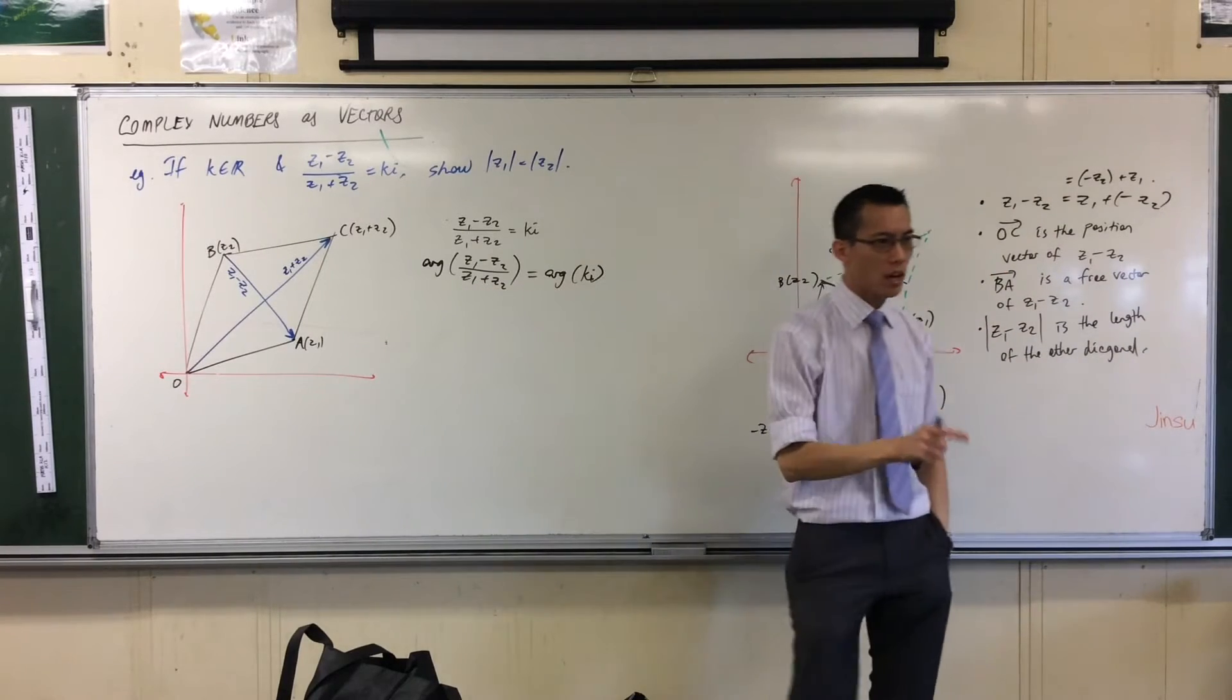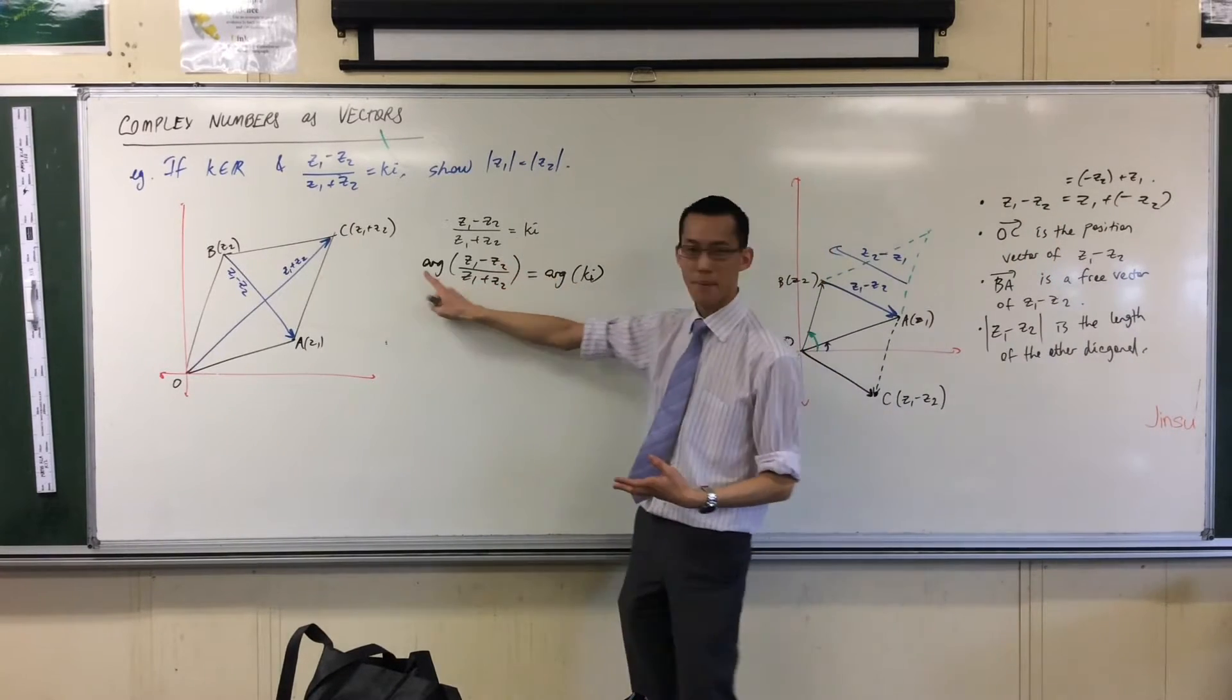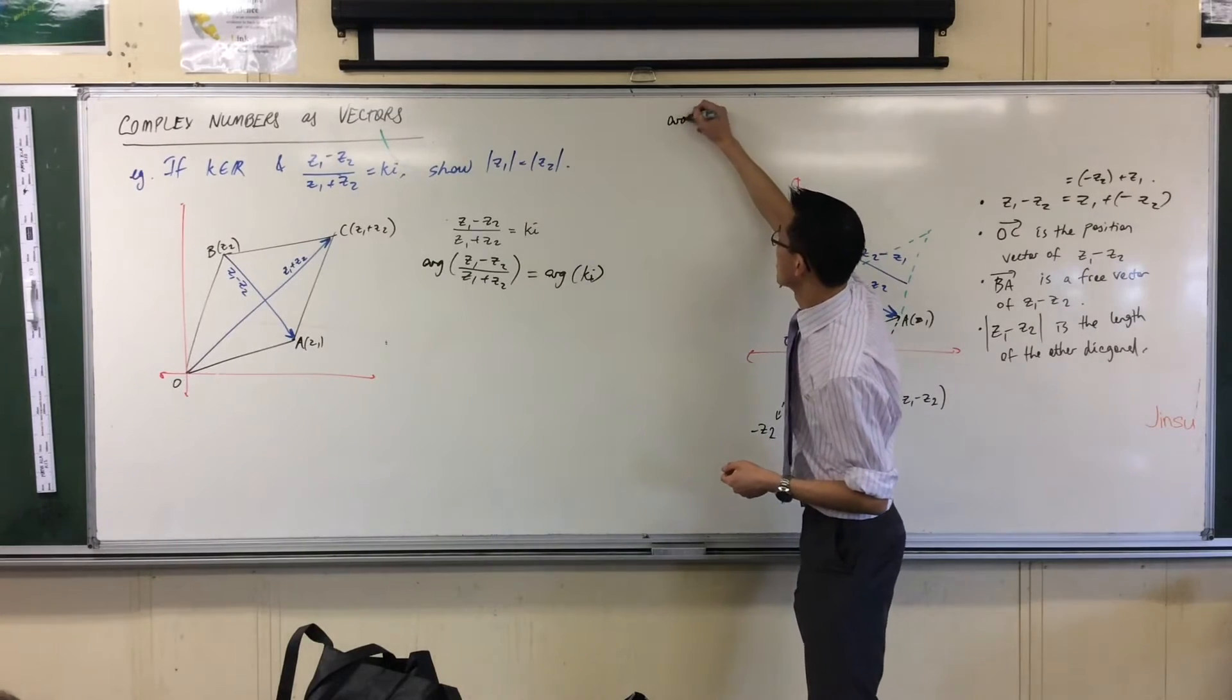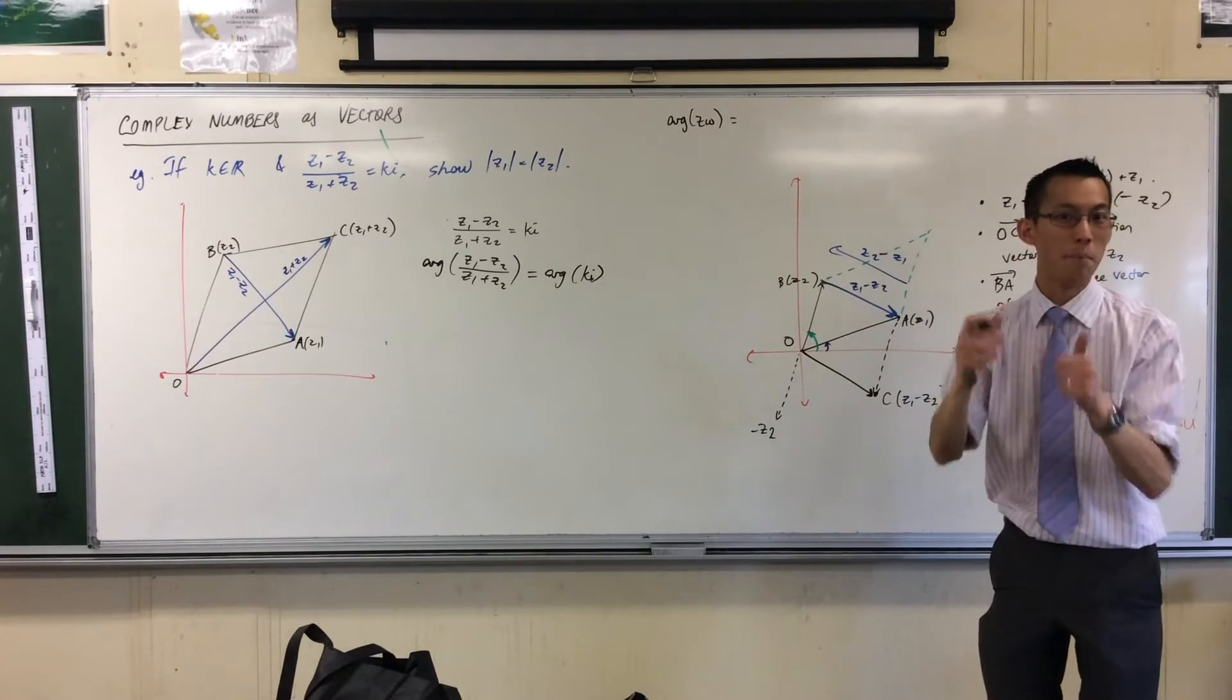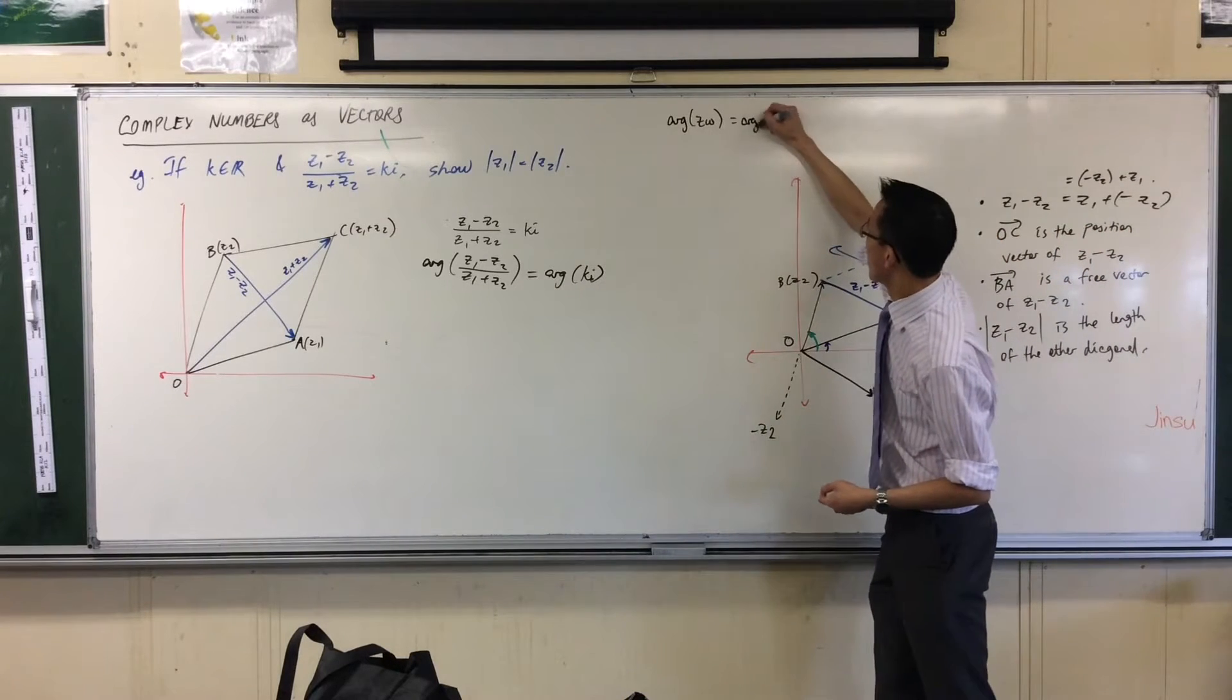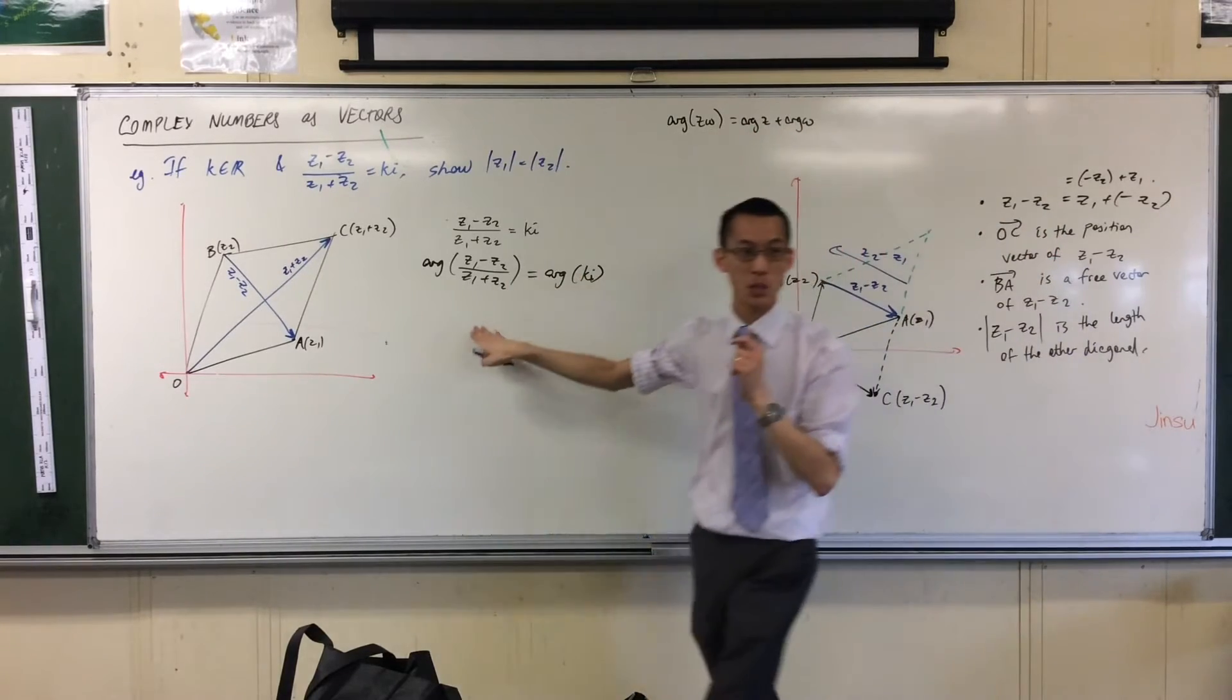Now have a look at this. Tell me what you remember about what happens when you take complex numbers, divide them, and therefore what that means about their arguments. If you take two complex numbers that are multiplied, what happens to their arguments in the new combined complex number? They've been added. Arg z plus arg omega. So that's what happens with multiplication. What happens with division?